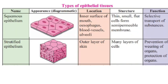Now we will see the types of epithelial tissues — their names, location, structure, and function. The first type is squamous epithelium. It appears as a flat surface with squarish or rectangular shapes. Its location is the inner surface of the mouth, the food pipe (esophagus), blood vessels, and alveoli. The structure consists of thin, small, flat cells with a semi-permeable membrane. Its function is the selective transport of substances — only selected substances can enter through this membrane.